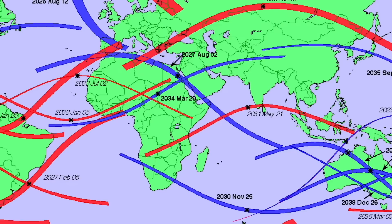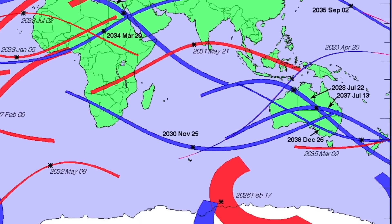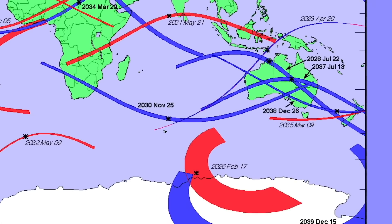Maybe you'll get the chance to see the 2034 eclipse — take a flight. Now notice something truly fascinating: in 2028, 2030, 2037, and 2038, Australia gets four eclipses in just 10 years. Wow, that's going to be amazing for them.